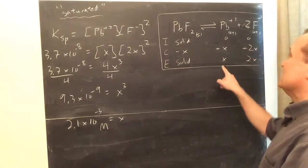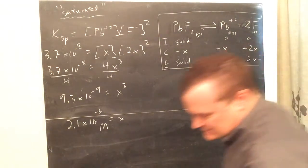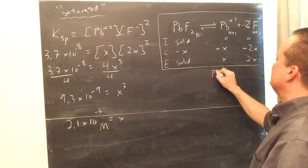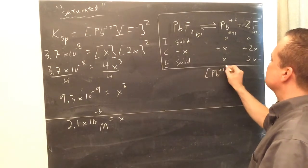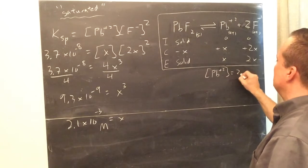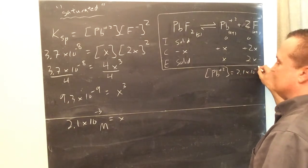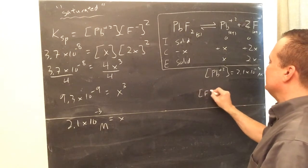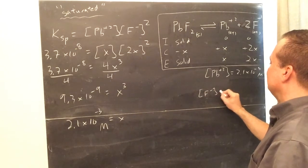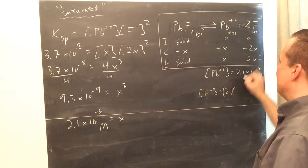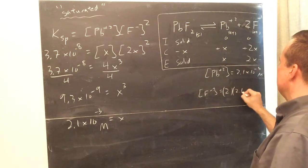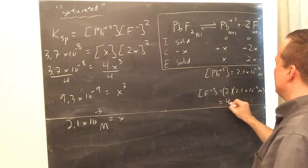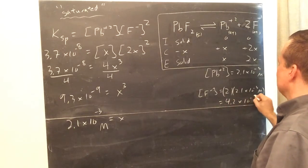X is something up here on the chart, very important for a KSP problem. Well, first of all, it is the lead concentration, and I don't think they ask you for that. They only ask for the fluoride, but you know the Pb plus 2 is going to be equal to 2.1×10 to the negative 3 molar. They didn't ask for it, but we did it. The F negative will be 2 times that, 2 times X, 2.1×10 to the negative 3 molar, which is going to be 4.2×10 to the negative 3 molar.